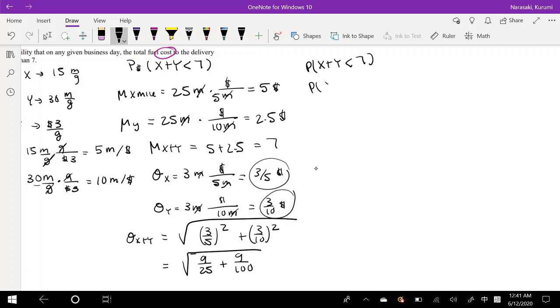So we can say x plus y minus the mean of x plus y over the standard deviation of x plus y is less than 7 minus the mean of x plus y over the standard deviation of x plus y. And then we know that this side is just the z-score because that's the definition of a z-score, is less than 7 minus the mean of x plus y we found right here to be equal to 7.5.